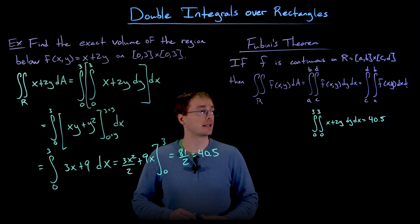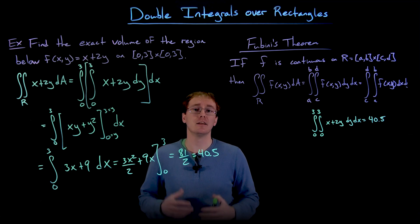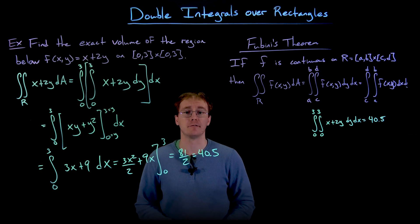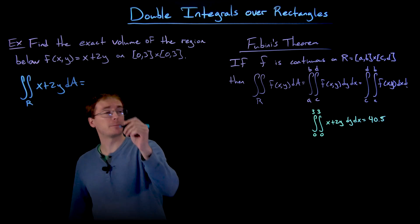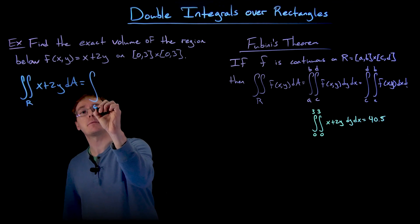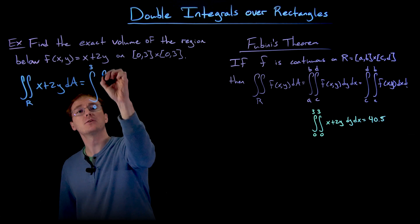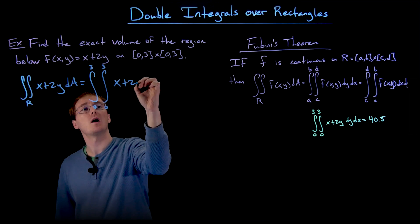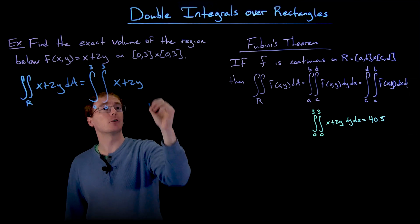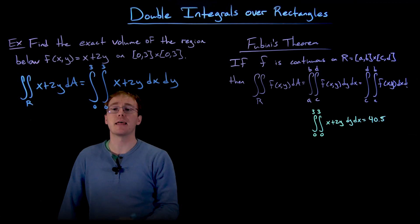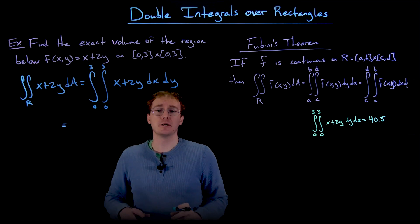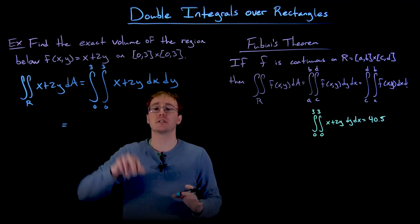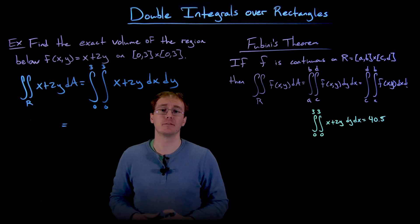Now we'll run through the example again with the order of integration switched to confirm we get the same answer of 40.5. The second iterated integral is the integral from 0 to 3 of the integral from 0 to 3 of x + 2y, dx dy. It still looks like the same limits, but technically they switch — if x and y had different intervals we'd need to change the inner and outer limits accordingly.